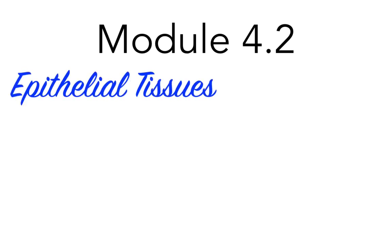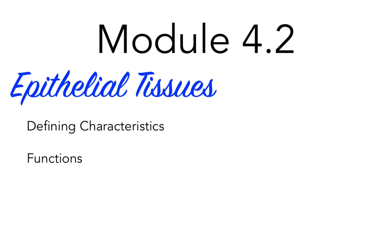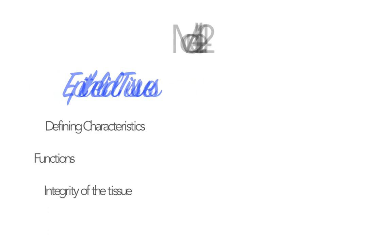Let's continue our study of tissues by taking a deeper look into the characteristics and functions of epithelial tissue. What are the defining characteristics of epithelial tissue, and what does epithelial tissue do? How do the cells of epithelial tissue interact and communicate with one another? We will need two separate lessons to explore those questions, but let's start with these important ones.